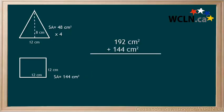Finally, we can add all of our totals together to get a final surface area for this rectangular pyramid of 336 centimeters squared.